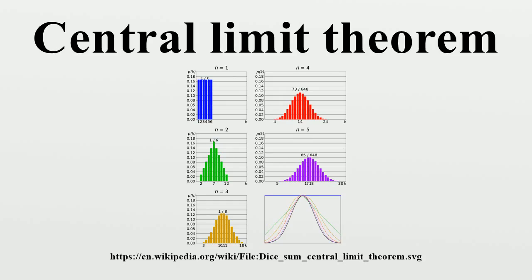Proof of classical CLT: For a theorem of such fundamental importance to statistics and applied probability, the central limit theorem has a remarkably simple proof using characteristic functions. It is similar to the proof of the law of large numbers. For any random variable Y with zero mean and unit variance, the characteristic function of Y is, by Taylor's theorem, 1 − t²/2 + o(t²), where o is little-o notation for some function of t that goes to zero more rapidly than t². Letting Y be the standardized value of xi, the standardized mean of x1, x2, ..., xn has, by simple properties of characteristic functions, a characteristic function of the form (1 − t²/(2n) + o(t²/n))^n. By the limit of the exponential function, this limit is just the characteristic function of a standard normal distribution N(0,1), and the central limit theorem follows from the Lévy continuity theorem, which confirms that convergence of characteristic functions implies convergence in distribution.